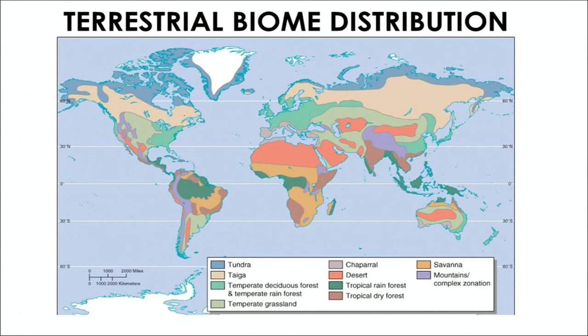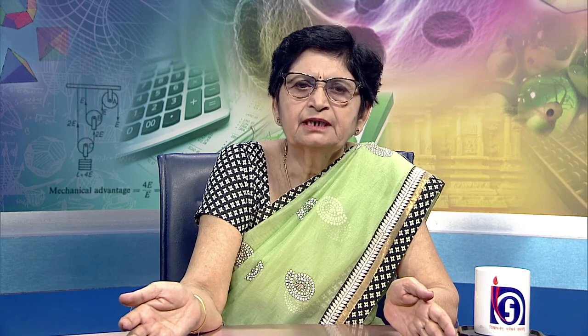In this figure, you can see the distribution of deserts, grasslands, tropical, temperate, deciduous forests, and the mountains and mixed zones. Broadly, we have classified all these biomes into two main categories as already discussed.